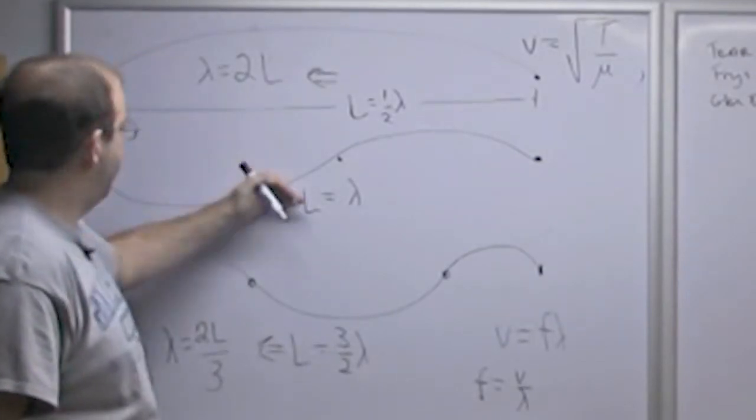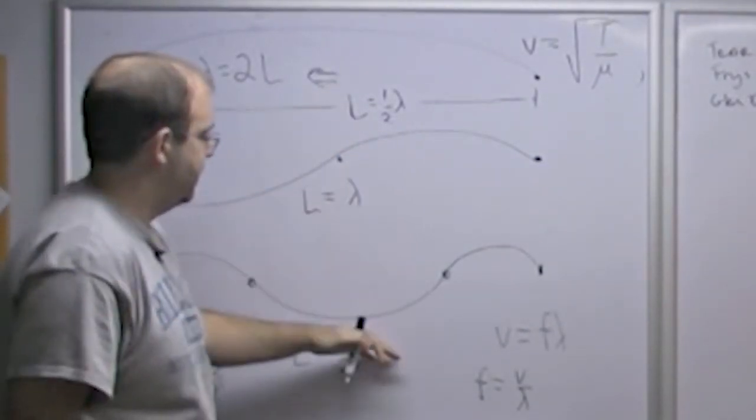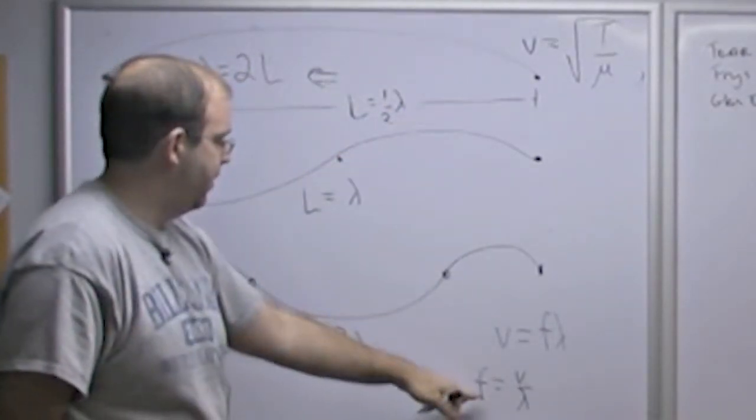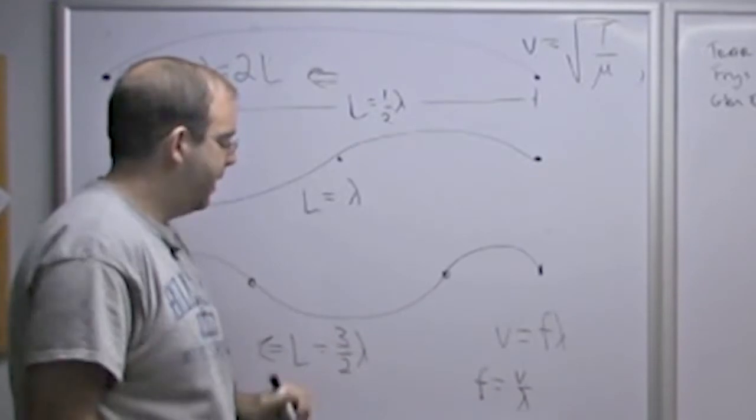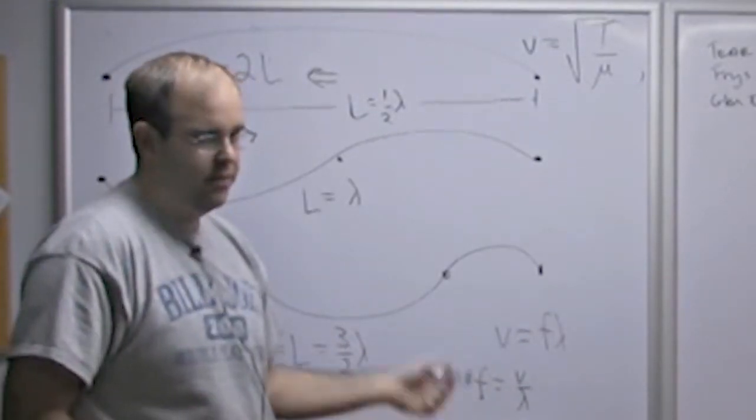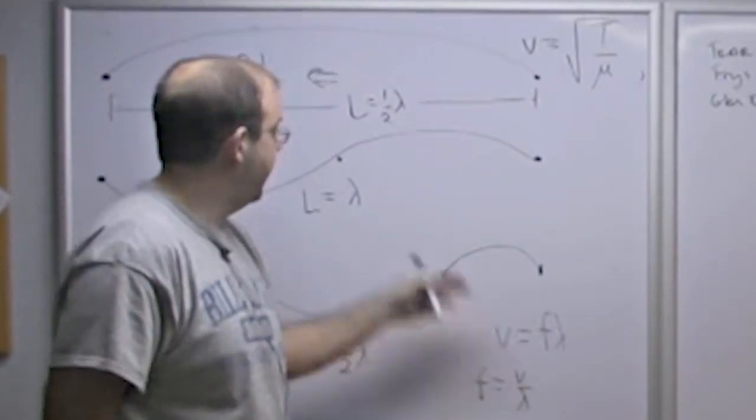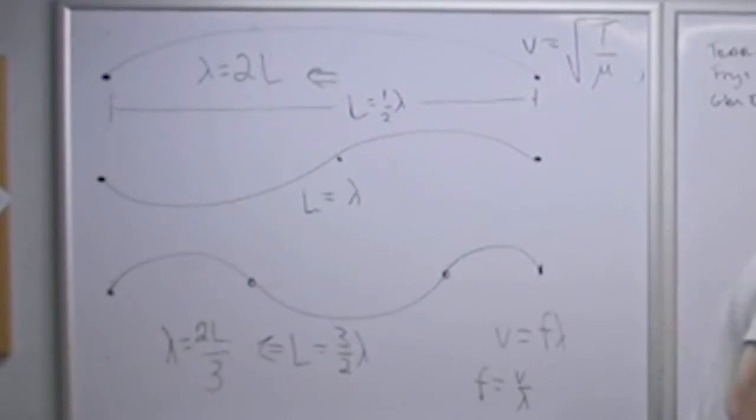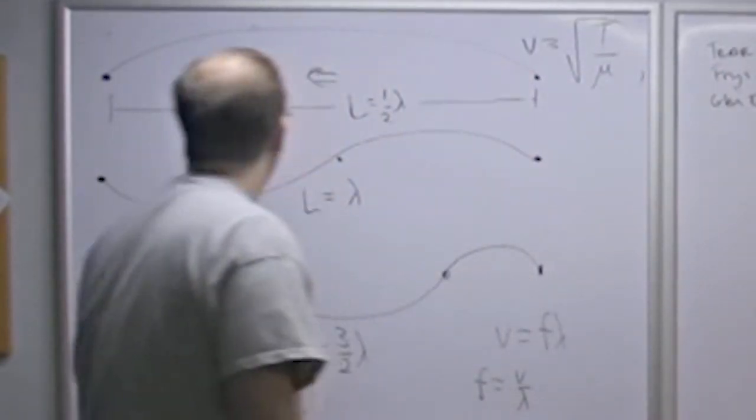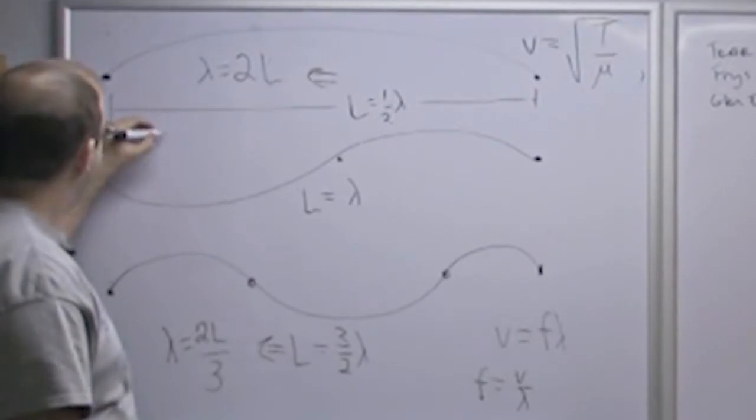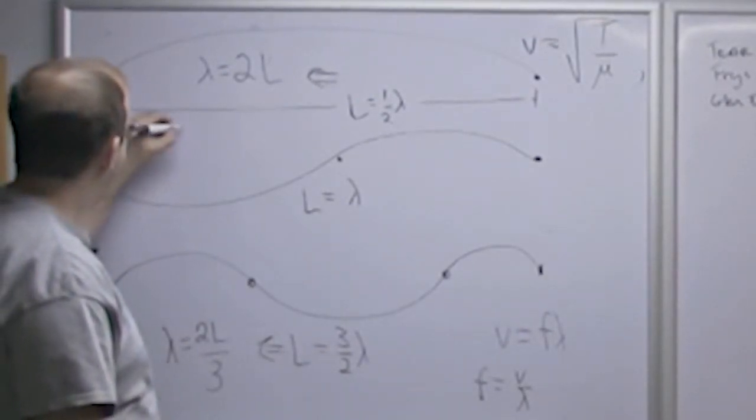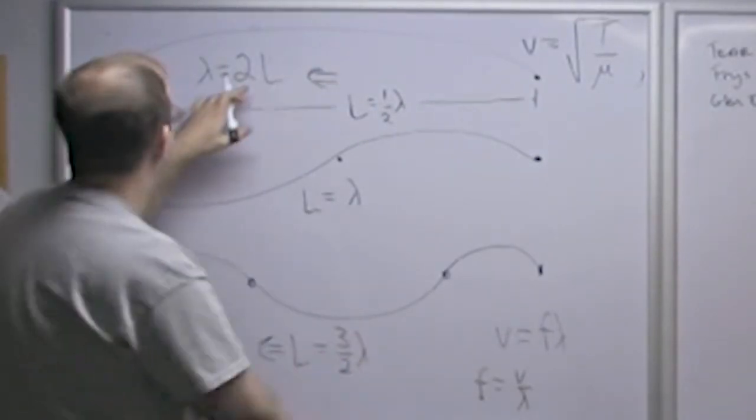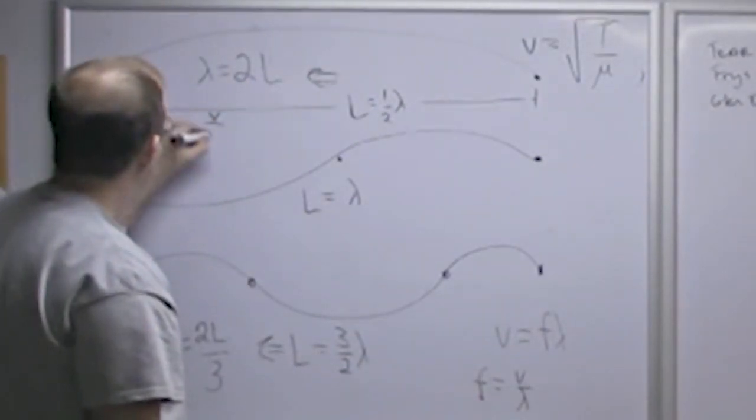So now I have lambda for each of these three resonances. And I can put that V is going to be the same for all of them. So I can put lambda in here and I have an expression for the frequency of each resonance in terms of V and L. And L is, again, the distance from the nut to the bridge, which shouldn't change. So we'll call this frequency up here F1. This is going to be V over lambda. Lambda is equal to 2L. So this is going to be V over 2L.